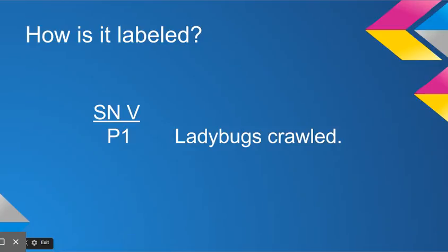Okay, ladybugs crawled. What crawled? Ladybugs. Ladybugs is our subject noun. Okay, what is being said about ladybugs? Ladybugs crawled. Verb, that's the action of the sentence. Okay, and our pattern is subject noun, verb, Pattern 1. So we have our subject and we have our verb.